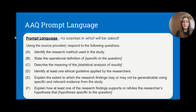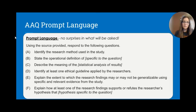Part A asks you to identify the research method used in the study. Part B asks for the operational definition of a specific variable. Part C asks about a statistical value — whether a correlational value, mean, median, mode, or other measures. Part D asks you to identify an ethical guideline applied by the researchers. Part E asks about generalizability of the evidence, and Part F asks whether the findings support or refute the researchers' hypothesis.